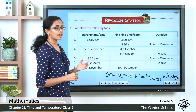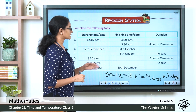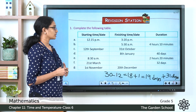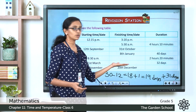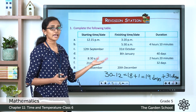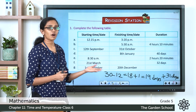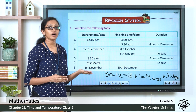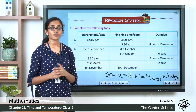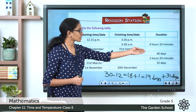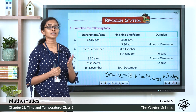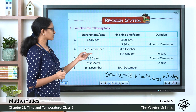Question D: you don't have the starting date, but the finishing date is 8th January and the duration is 40 days. Count 40 days backwards from 8th January. The first 8 days of January plus all 31 days of December gives 39 days. Since the duration is 40 days, you need one more day before 1st December, which is 30th November. So the starting date is 30th November.